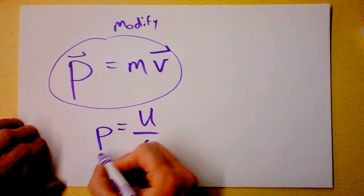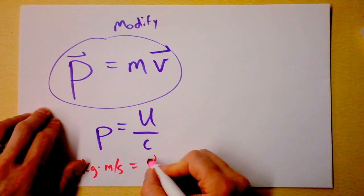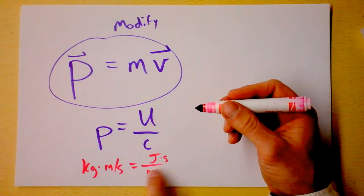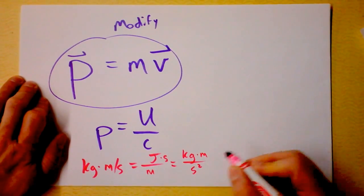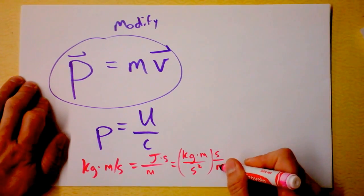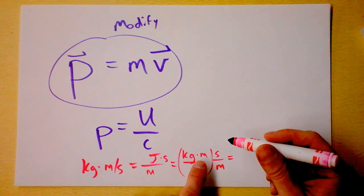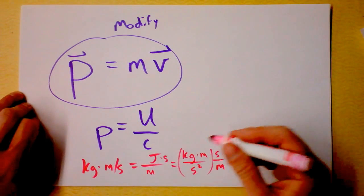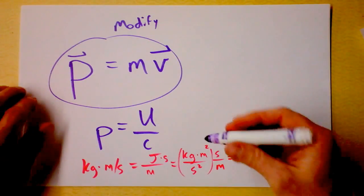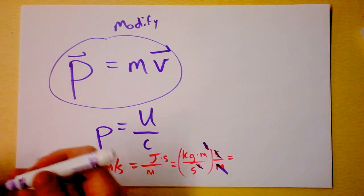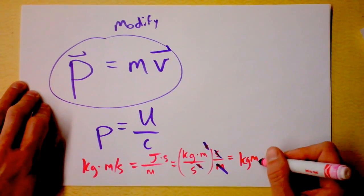Let's just see if the units work out. This momentum here, the units of that are supposed to be kilograms times meters per second. And the units of this energy, well I guess that's going to be joules, and I'm supposed to divide that by meters per second. So I'm going to do joule seconds divided by meters. Let's expand a joule. A joule is a kilogram meter squared per second squared because a newton is a kilogram meter per second squared. So now we can clean everything up and it will work. This cancels that and this cancels that and we do in fact find that this is at least a reasonable definition of momentum because the units are consistent.